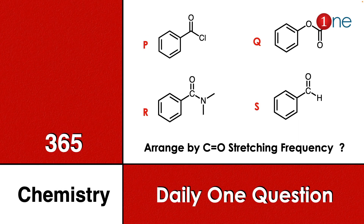Welcome to One Chemistry. This is the 365 Chemistry Series — daily one question for you. Here, four different carbonyl compounds are given: P is acid chloride, Q is ester, R is amide, S is aldehyde. You have to arrange these four compounds by their C=O stretching frequency.